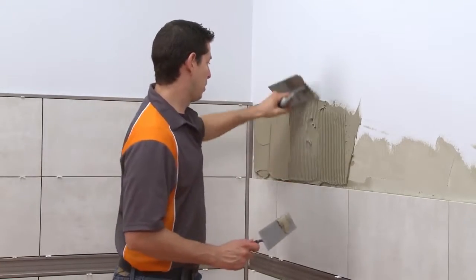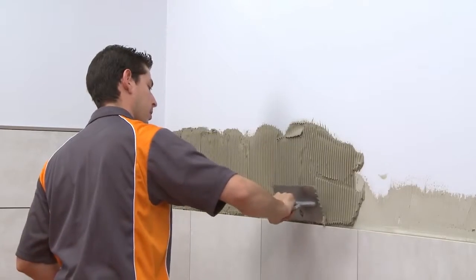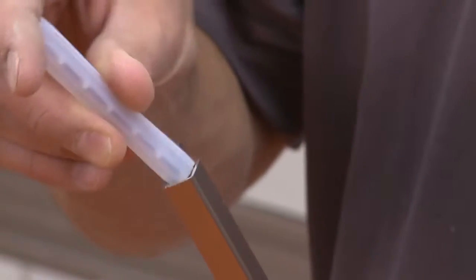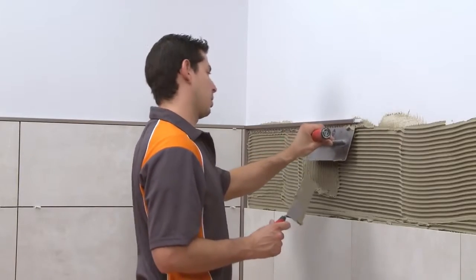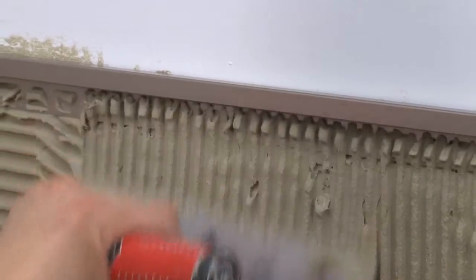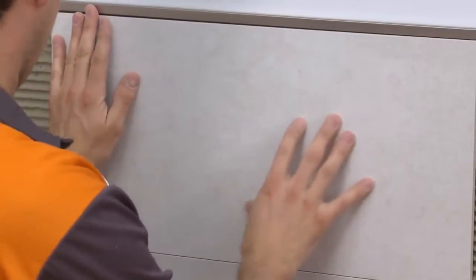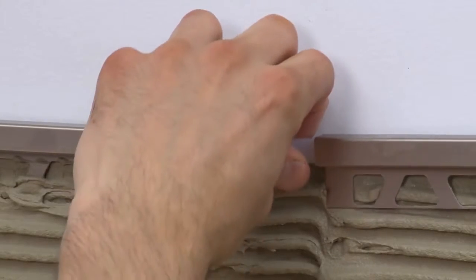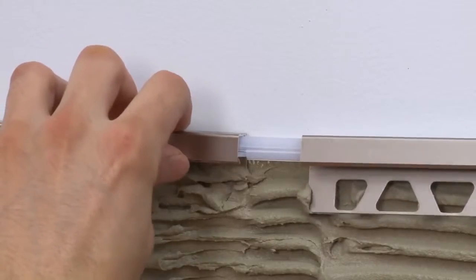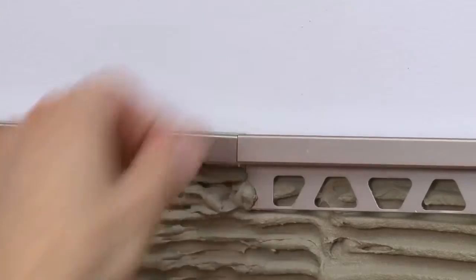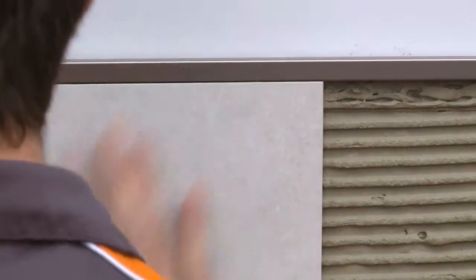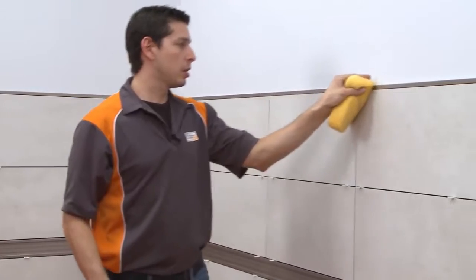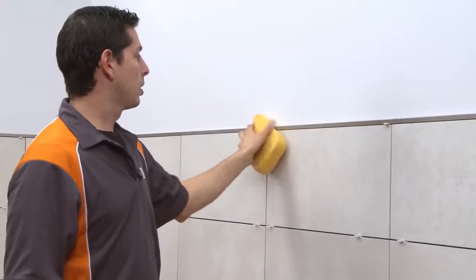Apply thinset mortar in preparation to install the next section of Quadec and the final course of wall tile. Connectors are available and can be used to help align consecutive Quadec profiles. Install the profile and trowel additional thinset mortar over the anchoring leg. Install a tile to help hold the profile in place, then slide the adjacent section of Quadec over the connector and abut the previously installed section. Install the remaining wall tile flush with the adjacent profiles, and be sure to remove excess setting material from the profile surfaces to avoid discoloration or damage to the finish.